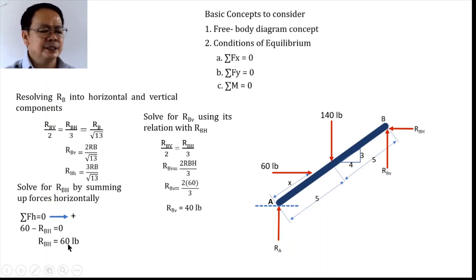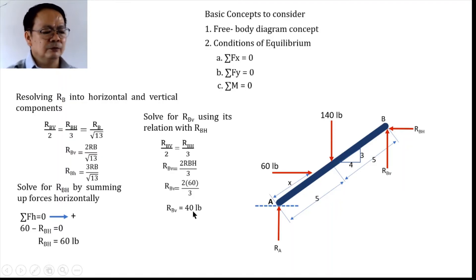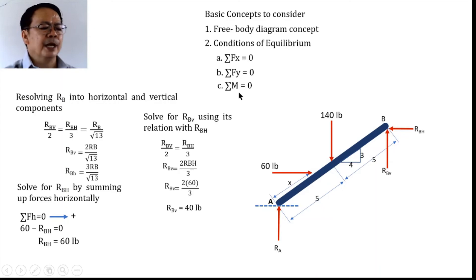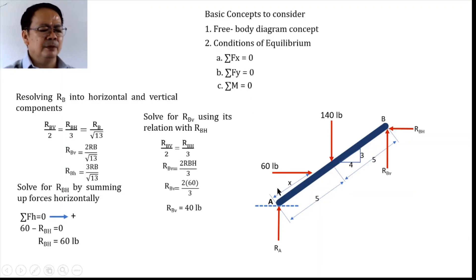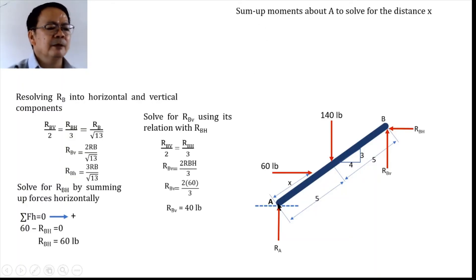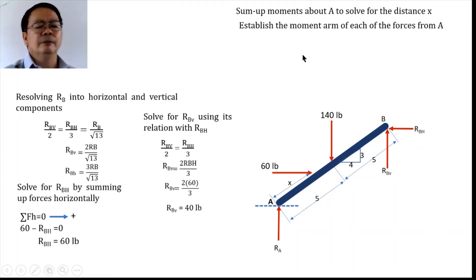Having solved R_BH and R_BV as 60 and 40 pounds respectively, we now solve for the value of X — the distance at which the 60 pounds force is applied along line AB. We apply the third condition of equilibrium: summation of moments about point A equal to zero, since we are referencing the distance of the 60-pound force from point A.